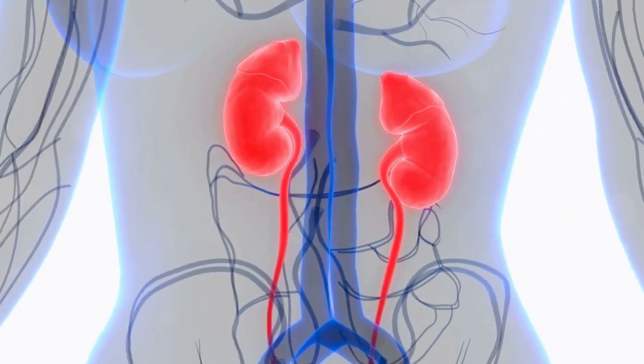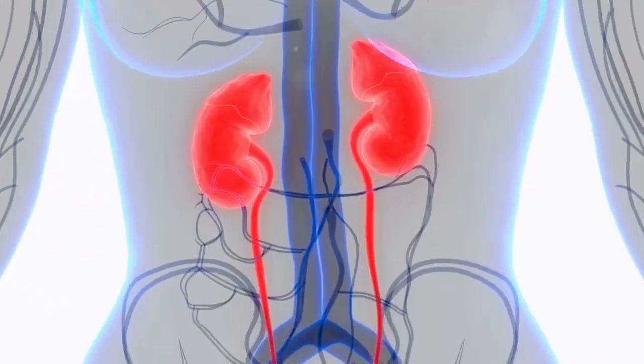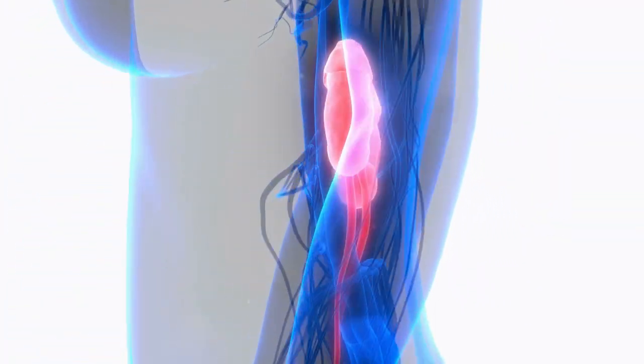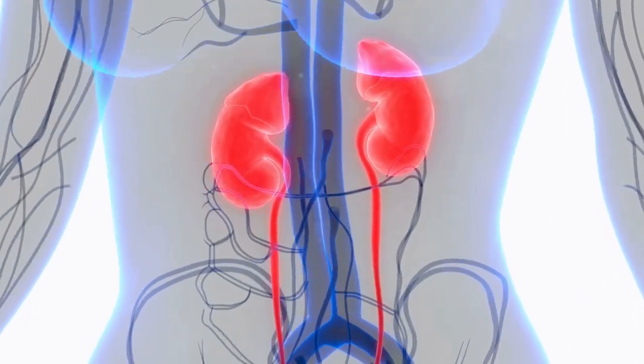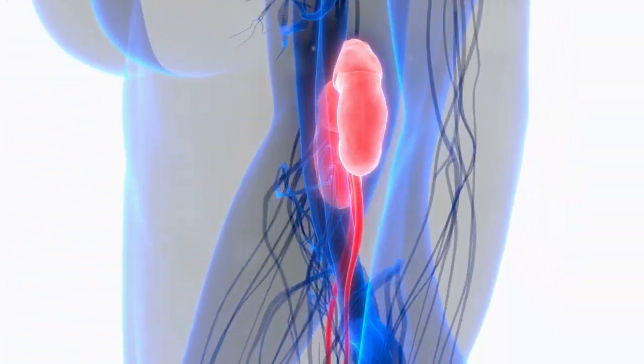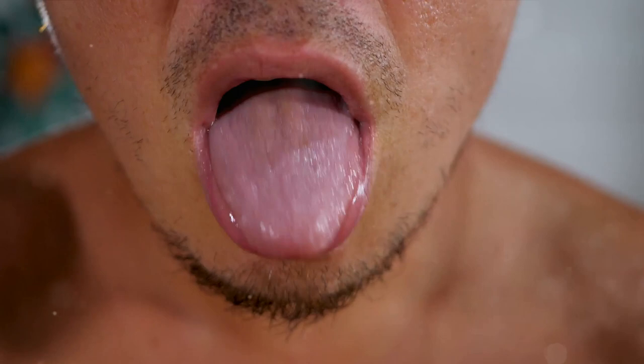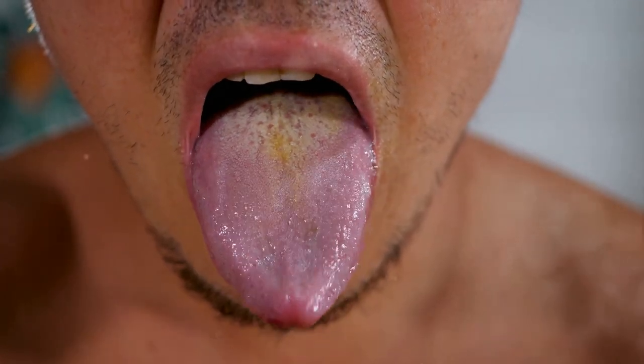This metallic taste can also make certain foods, especially meats, unappetizing. If you're suddenly finding your favorite steak tastes more like a handful of pennies, it might be time to see a doctor. So, remember this. If your food starts tasting like coins, it might not be a new recipe, it could be your kidneys.